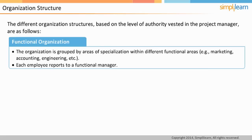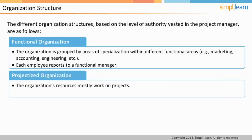The next type of organization is projectized organization. In such organizations, there are no departments. The organization's resources mostly work on projects. Team members report to a project manager. The project manager has complete control over the resources. When the project is completed, either they move on to another project or they look for some job outside the company.